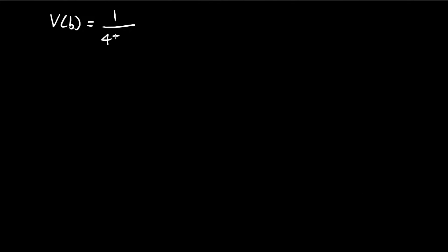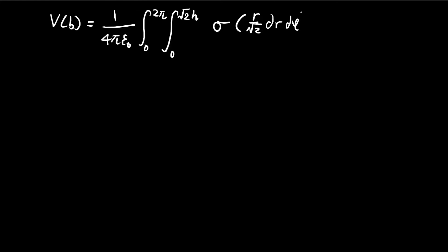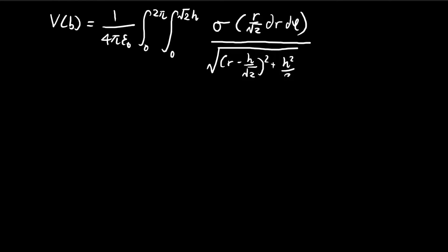We have 1 over 4πε. The bounds go from 0 to 2π for φ, and from 0 to √2·h for r. Then we have r dA = r·(r/√2) dr dφ, divided by η. This integral is rather intractable at this point, so the obvious thing is to try substitution. Judging from the denominator, we substitute using tangent: let r − h/√2 = (h/√2)·tan θ.